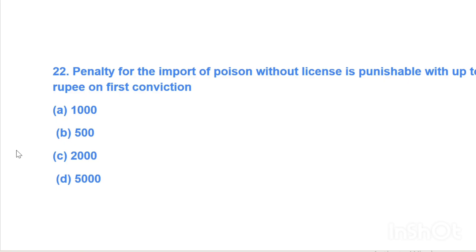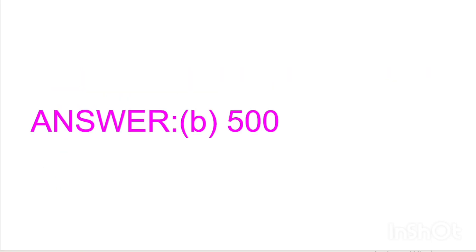Next question: Penalty for the import of poison without license is punishable with how many rupees fine on first conviction? Option A: Rs. 1,000, Option B: Rs. 500, Option C: Rs. 2,000, Option D: Rs. 5,000. Answer is Option B, Rs. 500.